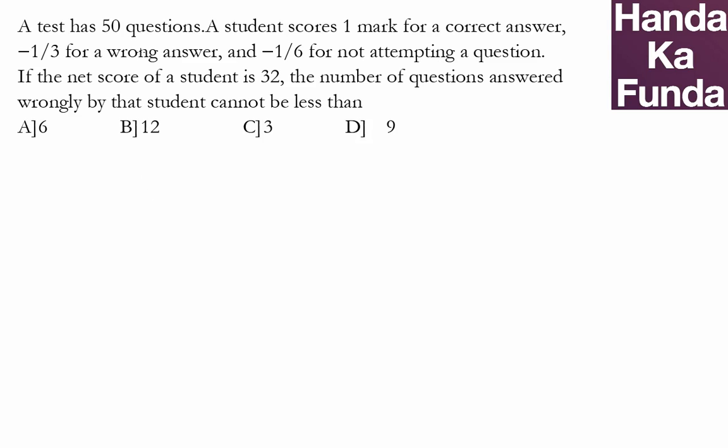In this question, we're talking about a test with 50 questions. You can get a question correct, wrong, or not attempt it. So there are three types of attempting a question: you can get it correct, get it wrong, or choose not to attempt it.